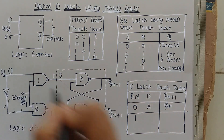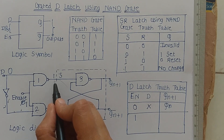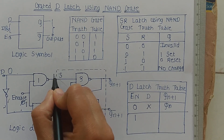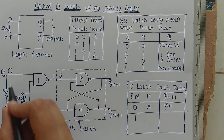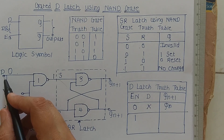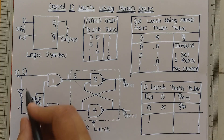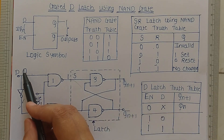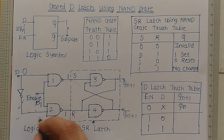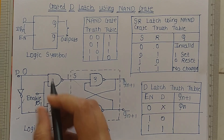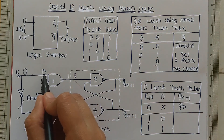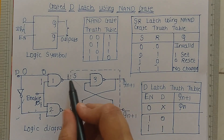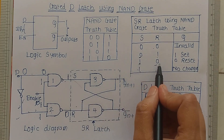Now let us make enable one and D input zero. As per the NAND gate truth table, when one input is zero, the output is one, so S becomes one. The first NAND gate receives inputs D equals zero and enable equals one — zero NAND one gives one, so S equals one. The second NAND gate receives the inverted D, which is one, and enable one — one NAND one gives zero, so R equals zero. From the SR latch truth table, when S equals one and R equals zero, Q equals zero.